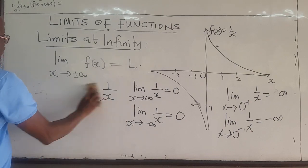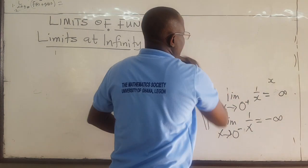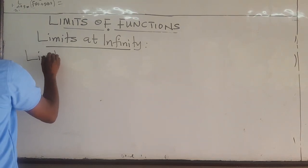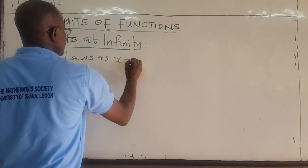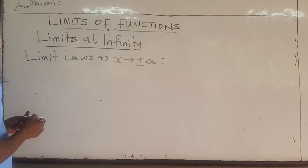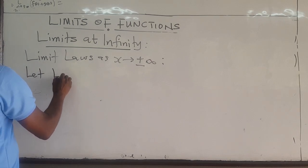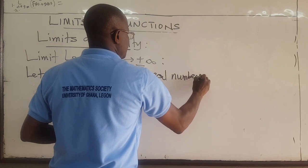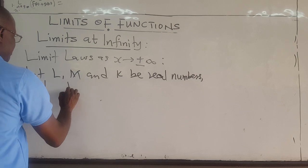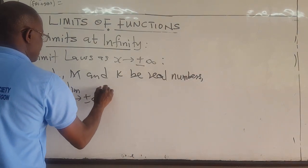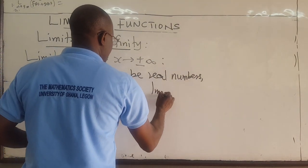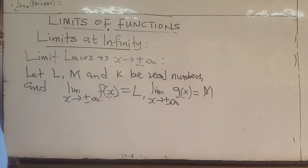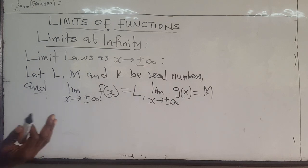We'll look at a couple of laws, just like we did for the other limits — some laws that will help us to determine limits at infinity. So, let L, M, and K be some real numbers. Suppose that the limit as x approaches plus or minus infinity of some function f(x) equals L, and the limit as x approaches plus or minus infinity of another function g(x) equals M, another real number. This is just some constant.